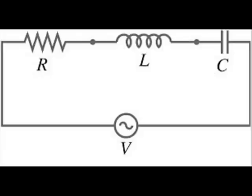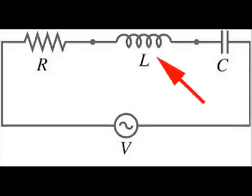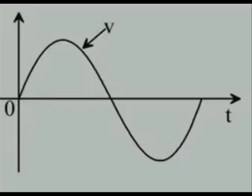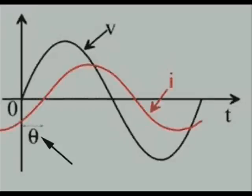Now, imagine the load has all resistance, inductance, and capacitance, and due to the collective effect of these three parameters, the current shifts behind the source voltage by an angle theta. It is shown here in this figure. The black waveform here also represents the voltage and the red waveform represents the current.